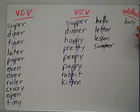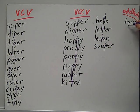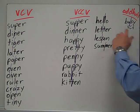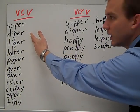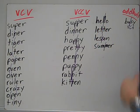Our oddball is 'busy.' Busy does not have the correct long vowel sound, but it is VCCV and you juncture there. So 'busy' fits here spelling pattern-wise, but sound-wise fits here — that's why it's the oddball.